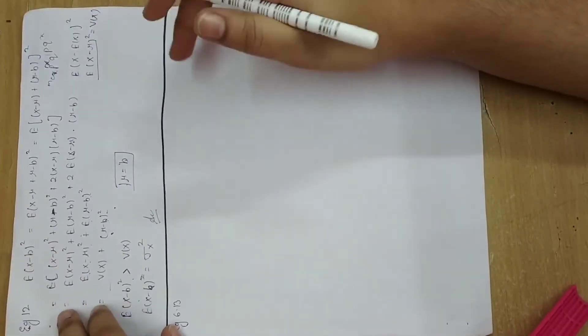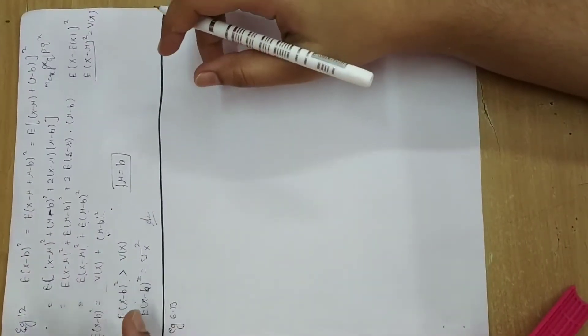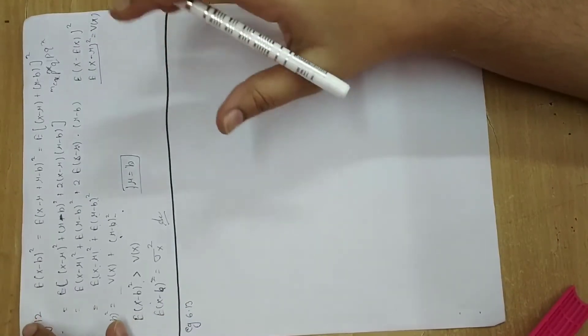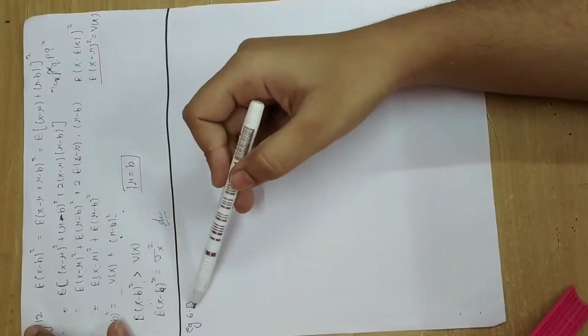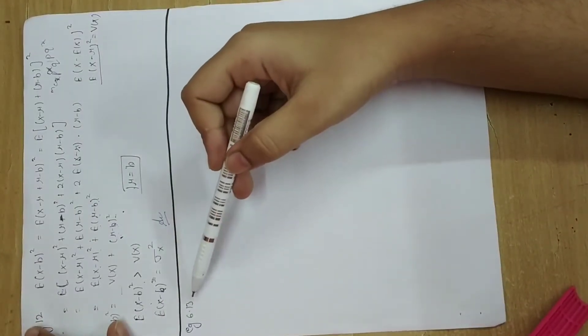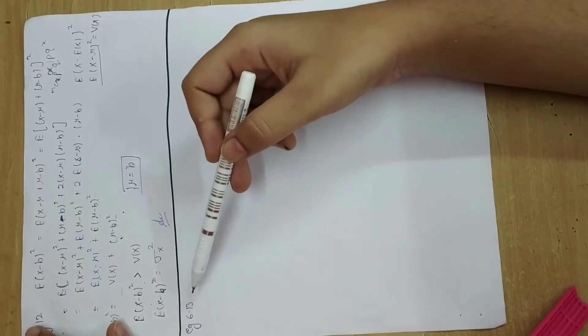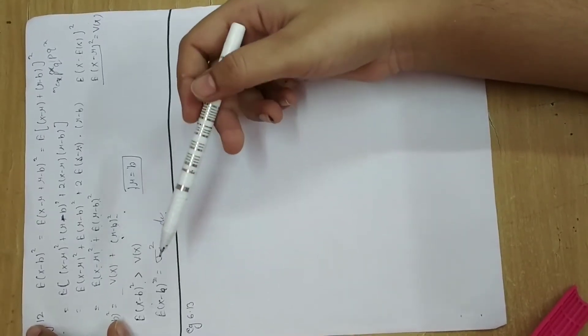Hello guys. This question is 6.13 of chapter 6 in Gupta and Kapoor. If you have the book, you can see example 6.13. It is called the sequence of a Bernoulli trial. You should know about Bernoulli distribution.